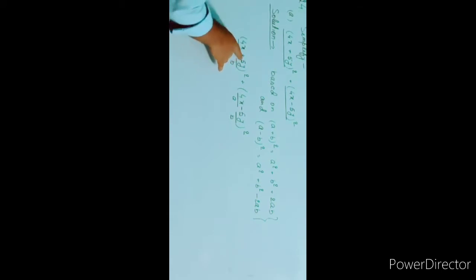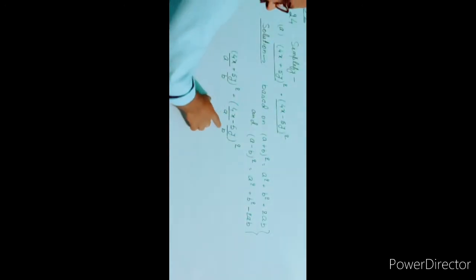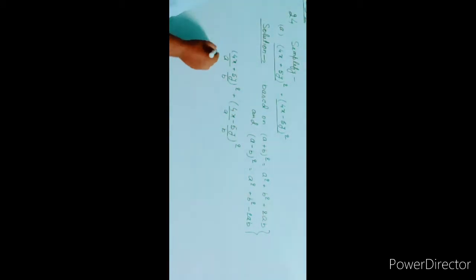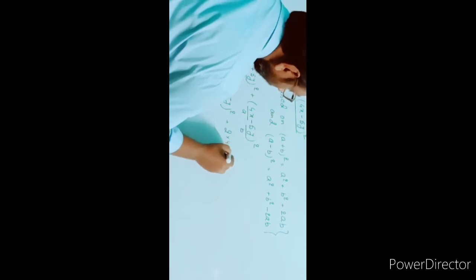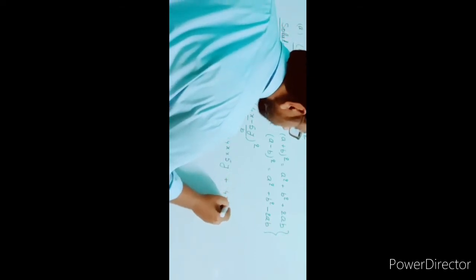The question is (4x + 5y)² + (4x - 5y)². Here, at the place of a we have 4x and at the place of b we have 5y — similarly for the second term. So the first term is in the form (a + b)² and the second term is in the form (a - b)². We can write: a² + b² + 2ab, and for the second: a² + b² - 2ab.